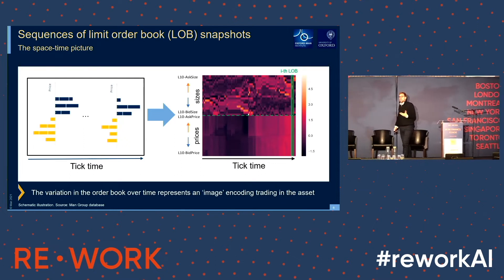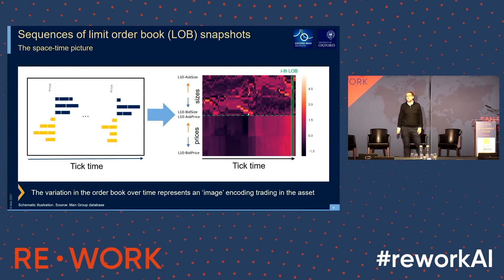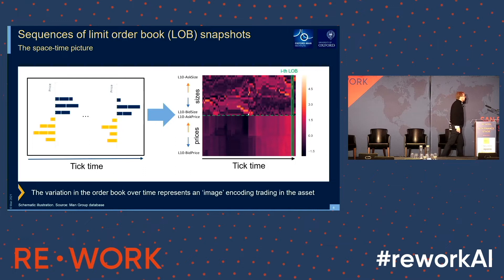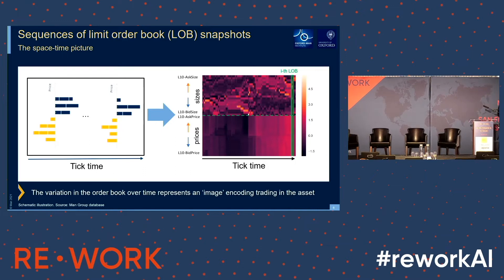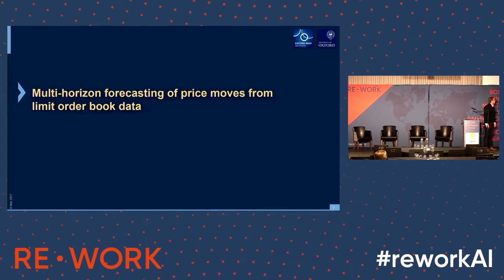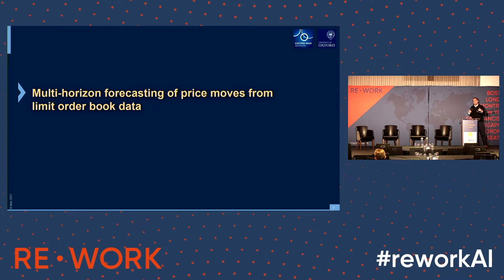You could think about whether those are images and use techniques from image recognition — that's actually what we did in some earlier work, where we developed a model called DeepLob, which utilizes techniques from image recognition and has found its way into a couple of prime algorithms at investment banks. But today I don't want to talk about image recognition, but about a model inspired by natural language processing. To do so, I first want to explain this concept of multi-horizon forecasting, which is at the center of this talk.